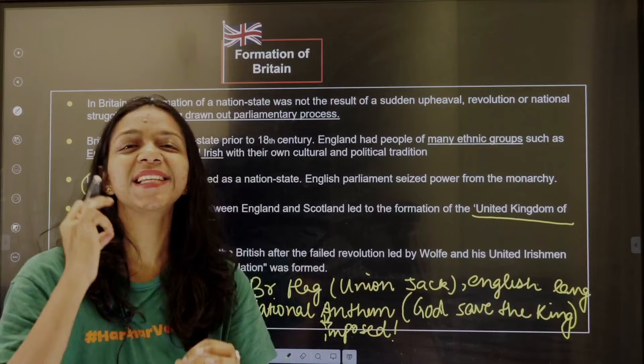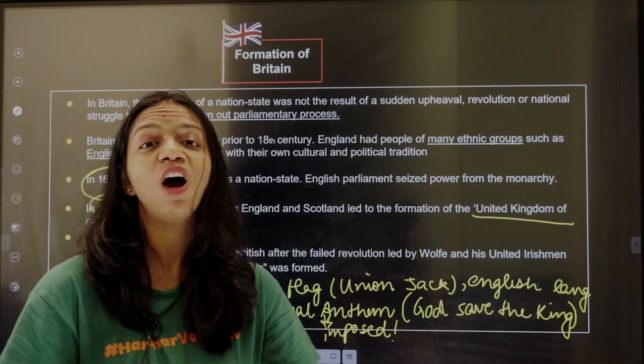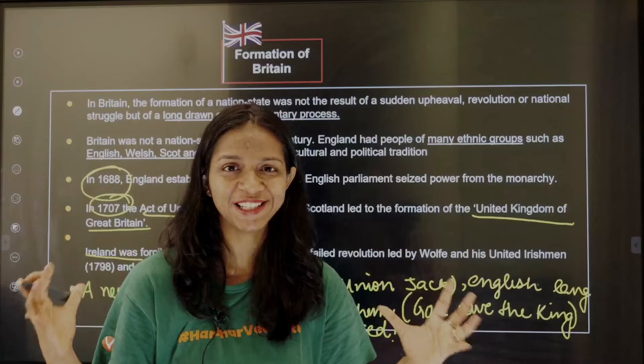After that, symbols of British supremacy were established — for example, the British flag known as the Union Jack, the English language, and the British anthem 'God Save the King' — which were enforced over the entire union. The first nations, Scotland and Ireland, were now subordinate to the British nation and the British union. That is how the British nation was formed.